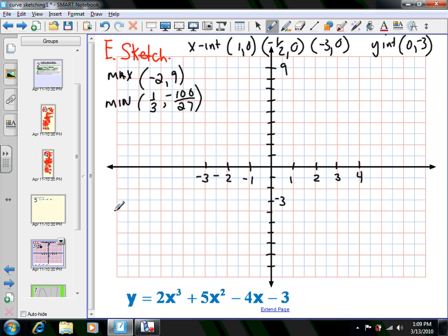Then we figured out that there was a maximum at (-2, 9), a minimum at (1/3, -100/27), and it should all give the same information with our intervals of increase and decrease as well. So I'm just going to start plotting some of these points and see what comes out.